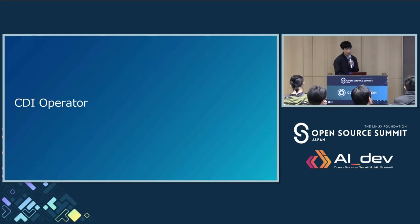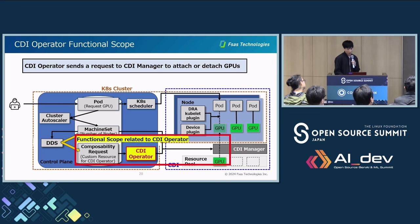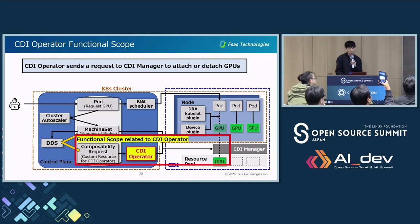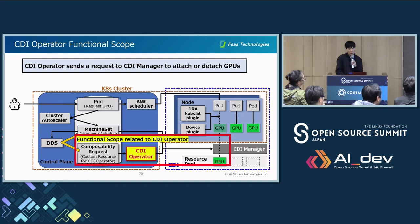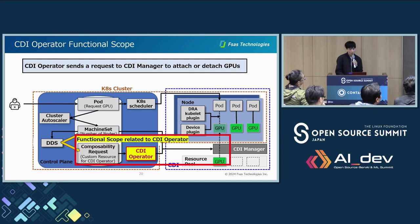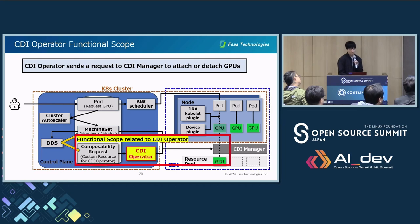Next, I explain the CDI operator feature. CDI operator sends a request to CDI manager to attach or detach GPUs from the resource pool. CDI operator has a custom resource, and DDS can change the configuration of devices in a node through this custom resource. The functional scope related to CDI operator is in the red block, covering the custom resource, CDI operator, and CDI manager.